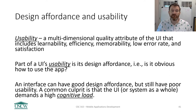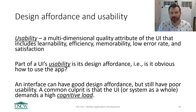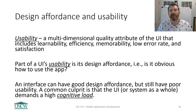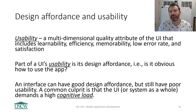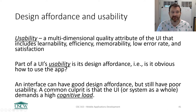Let's come back to our definition of usability for a minute. Usability is a multi-dimensional quality attribute of the UI that includes learnability, efficiency, memorability, low error rate, and satisfaction. All these things help an interface be usable. Part of the UI's usability is its design affordance — how obvious is it to use the app?